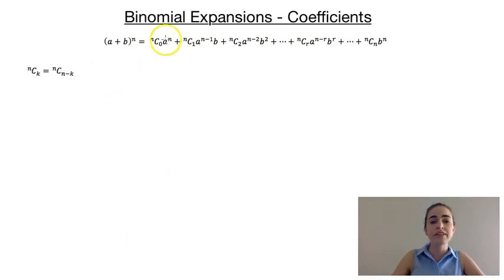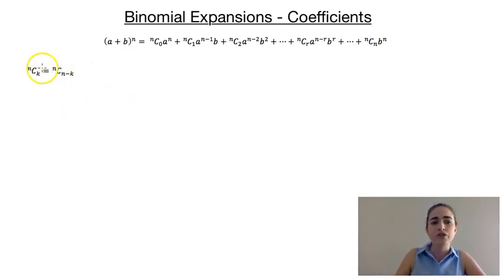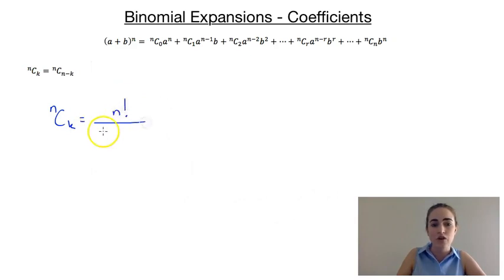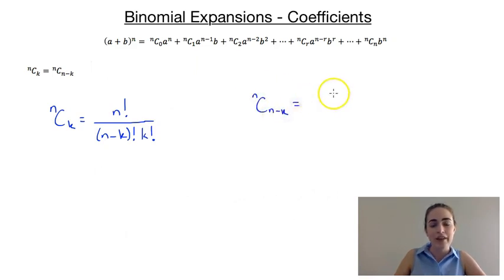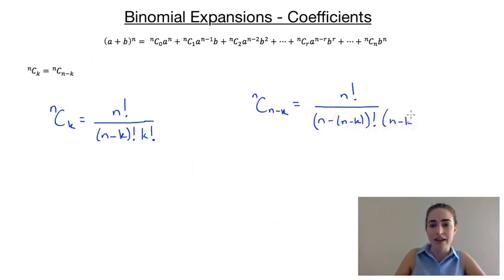The next thing I want to prove is the symmetry of those coefficients. So I want to prove that nck is equal to nc(n minus k). To do that, I'm going to go back to the factorial notation of combinations. So nck is defined as n factorial over (n minus k) factorial times k factorial. Our right-hand side would be nc(n minus k), and that's defined as n factorial over (n minus (n minus k)) factorial times (n minus k) factorial.